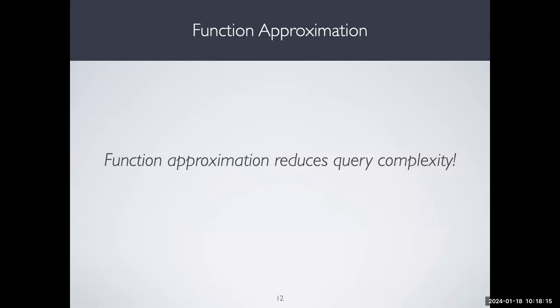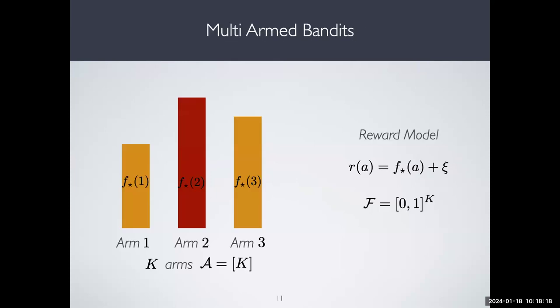One thing that happens in a multi-arm bandit scenario is that when you try out an arm, you don't learn anything about another arm. If I try one arm and I don't try arm two, I cannot know at all the mean reward of that arm.